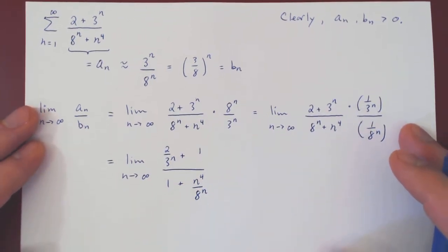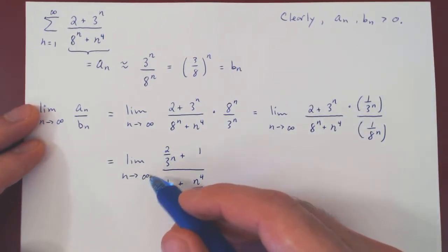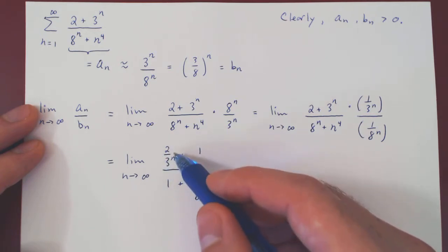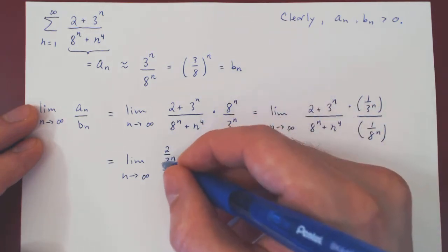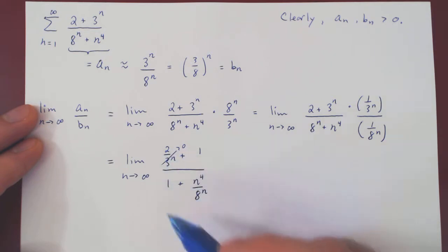As n goes to infinity, 2 over 3 to the n clearly shrinks to 0. 2 is a constant, 3 to the n goes to infinity, a constant over infinity shrinks to 0. So this is trivial.